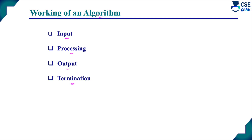A computer is an electronic device that will accept some input, process the input, and produce the output. The programming code is executed on the computer. So, the prior step before writing the programming code is the algorithm. This algorithm also should accept some input — without input, we cannot process anything — it should be processed, and it has to produce output.